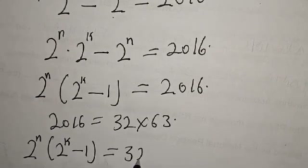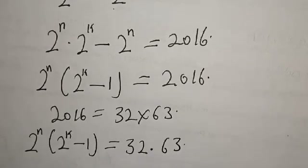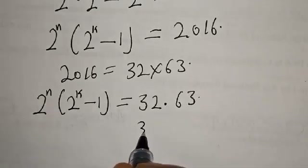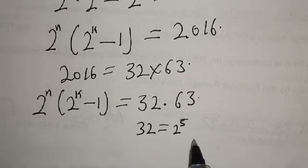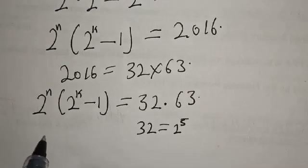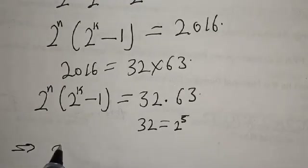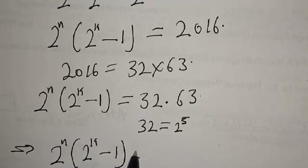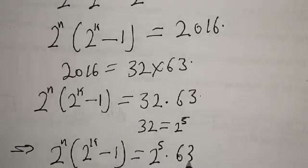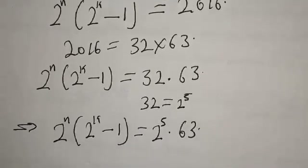Now 32 can be expressed as 2 raised to power 5 — that is, 2 times 2 is 4, times 2 is 8, times 2 is 16, times 2 is 32. So this implies that we have 2 raised to power n into 2 raised to power k minus 1 is equal to 2 raised to power 5 multiplied by 63.